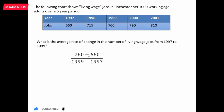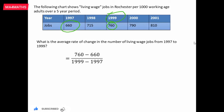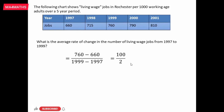Jobs in 1999 is 760, and jobs in 1997 is 660. We subtract: the final year is 99 and the initial year is 97. So we get (760 minus 660) over (99 minus 97), which equals 100 over 2. That gives us 50 jobs per year as the average rate of change.